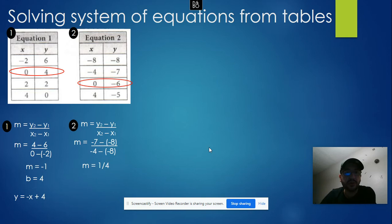My y-intercept is when x equals 0, which in this case is negative 6. I can write my equation: y equals 1/4 times x minus 6. Now I have my two equations and I can solve it.